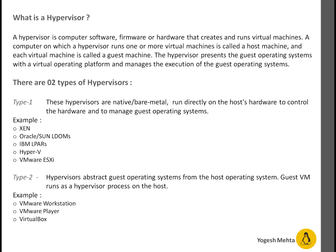Mainly there are two types of hypervisor. In the type one category, we have hypervisors which are native or bare metal — they run directly on host hardware to control the hardware and to manage the guest operating system. Examples include Xen, Oracle or Sun L-DOMs, IBM LPARs, Hyper-V, and VMware ESXi.